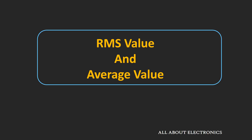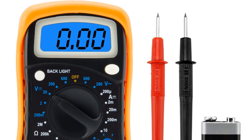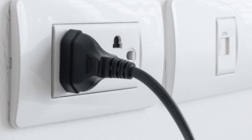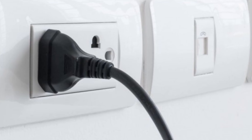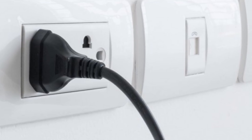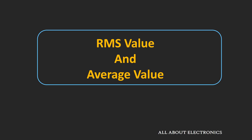Many of you might be already knowing about this RMS and the average value, but in this video we will learn about this in a different perspective. Most instruments used for measurement measure AC voltage and current in terms of RMS value. The voltage signal received at our home, that is 240V 50Hz, is also represented in terms of RMS value. So now the question is, why are AC voltage and current signals generally represented in RMS values?